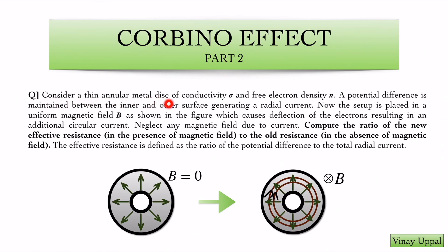Consider a thin annular metal disc of conductivity sigma and a free electron density n. A potential difference is maintained between the inner and the outer surface, generating a radial current. The setup is placed in a uniform magnetic field B as shown in the figure, which causes deflection of the electrons, resulting in an additional circular current.